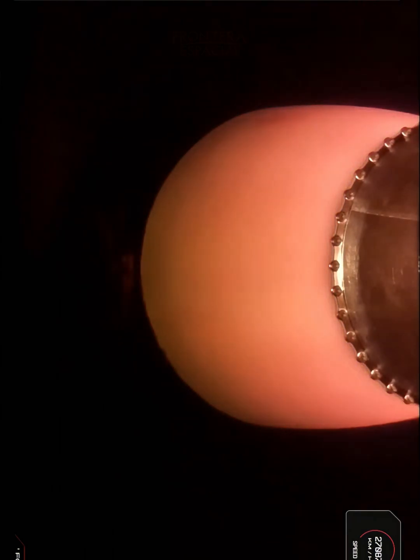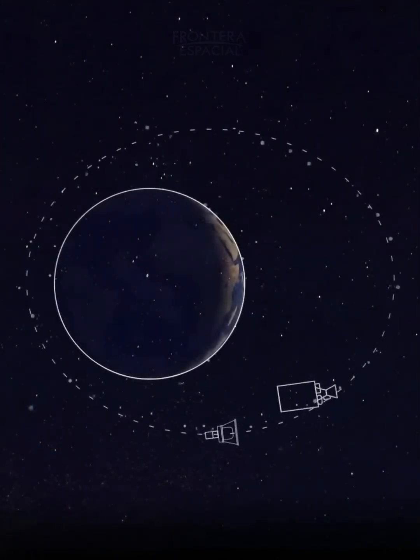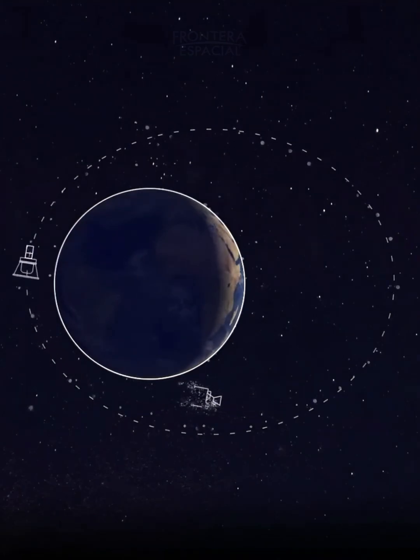Stage separation confirmed. It will follow an elliptical path around the Earth toward its exact destination for deployment. And this half orbit of Earth takes about 45 minutes.